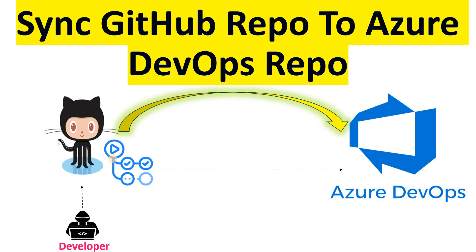I'm going to show you the steps you have to follow to achieve this scenario. First, you import the repository from GitHub into Azure DevOps, and then we'll see how to create a GitHub Actions pipeline which will keep the sync between the GitHub repository and the Azure DevOps repo.